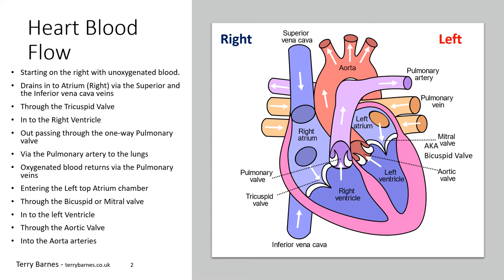Starting on the right-hand side, this is where unoxygenated blood flows into the top chamber, the right atrium. This blood has very little oxygen left — it has been around the body and now needs to be pumped out to gain oxygen from the lungs. It enters from above via the superior vena cava and from below via the inferior vena cava, both terminating into the right atrium, the top right-hand chamber of the heart.